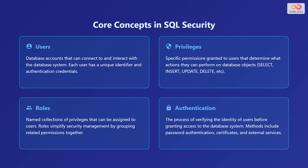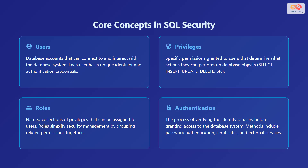The next concept is privileges — specific permissions granted to users that determine what actions they can perform on database objects. Examples of privileges include SELECT, INSERT, UPDATE, and DELETE. Roles are named collections of privileges that can be assigned to users, simplifying security management by grouping related permissions together. Finally, authentication is the process of verifying the identity of users before granting access. Authentication methods include password authentication, certificates, and external services.